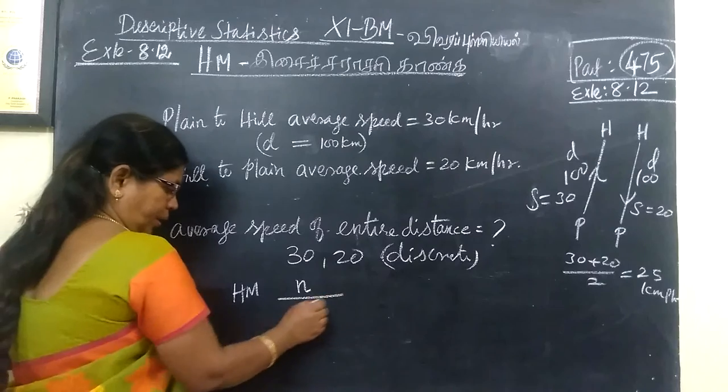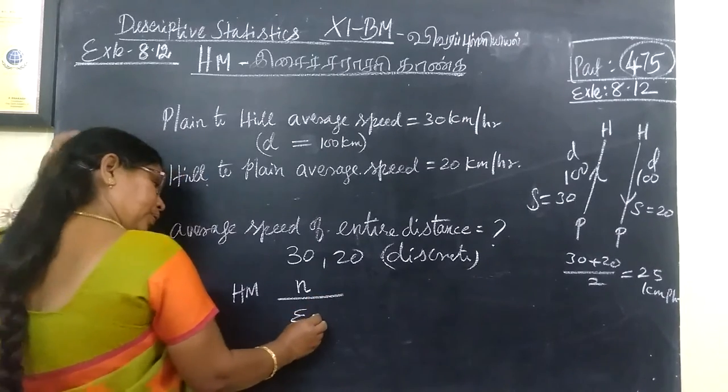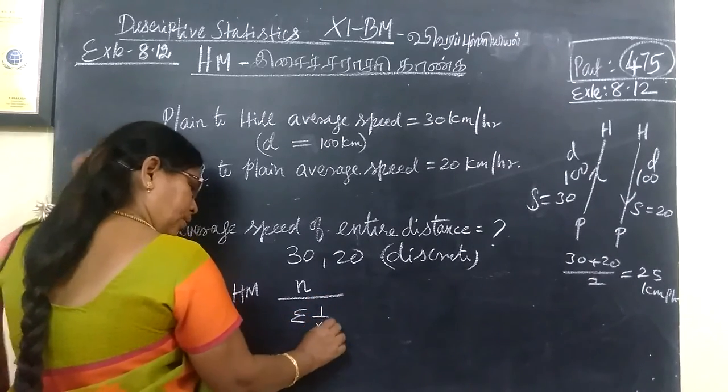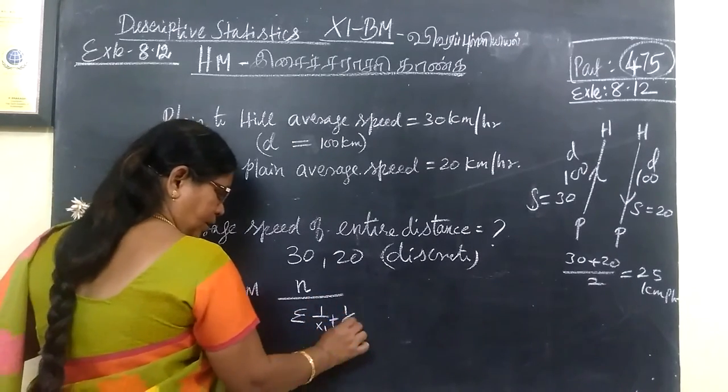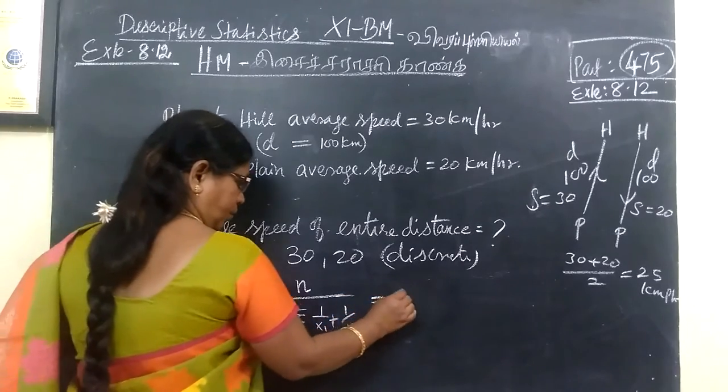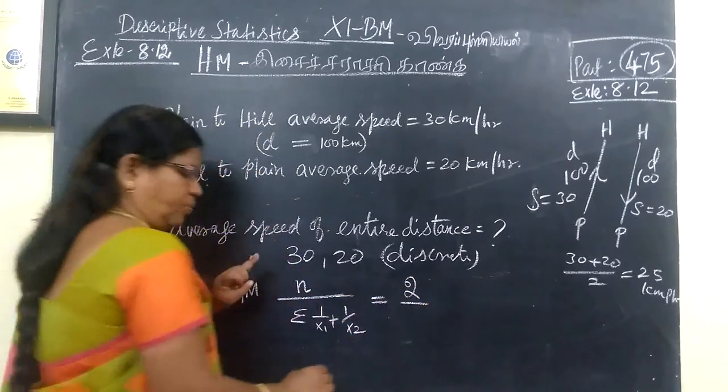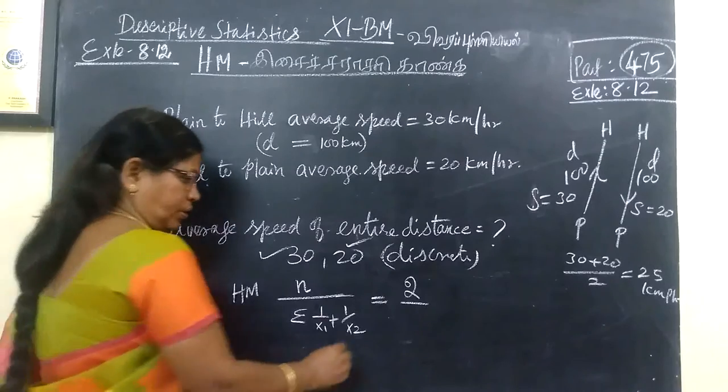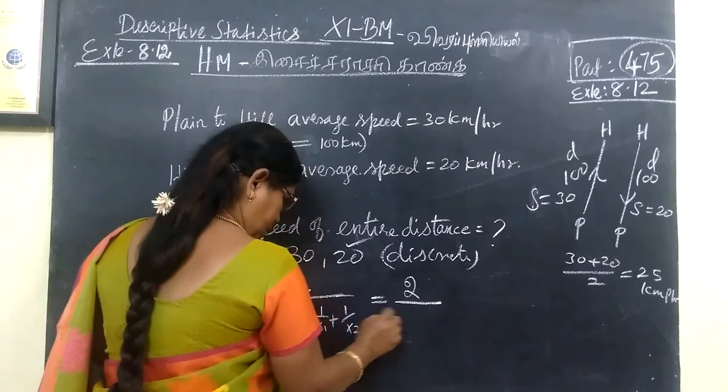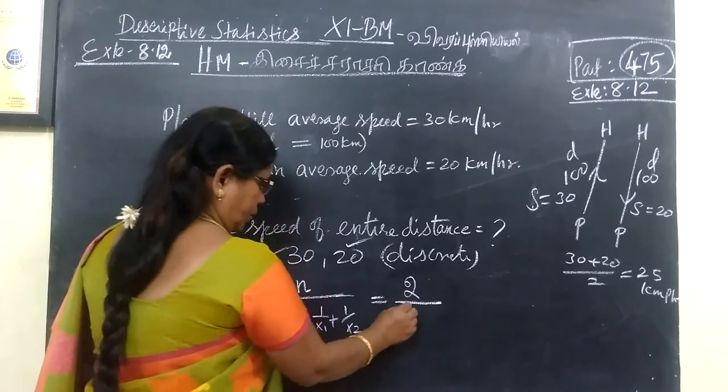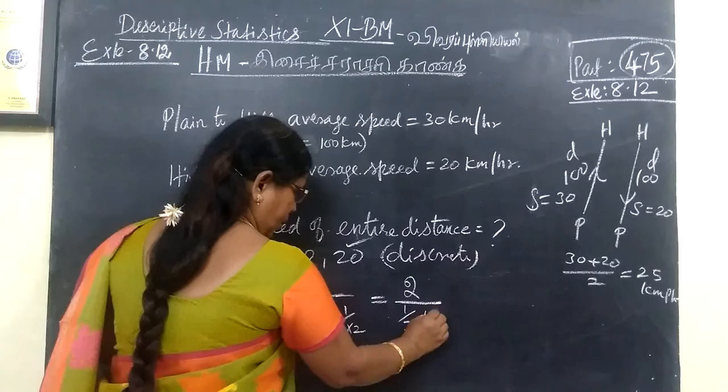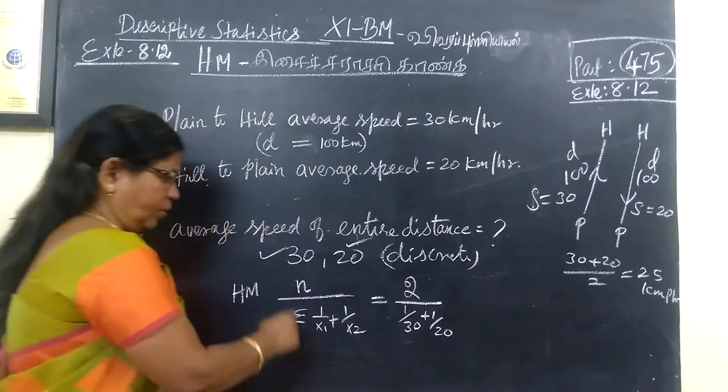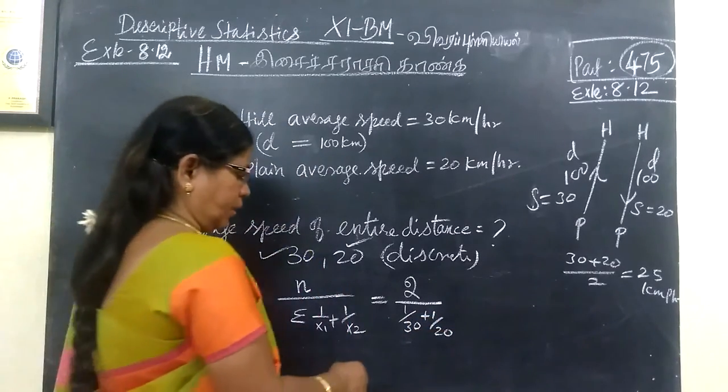The formula is N by sigma 1 by xi. That equals number of observations, 2. Two observations. By this one added: 1 by 30 plus 1 by 20. This is the reciprocal value we are adding.